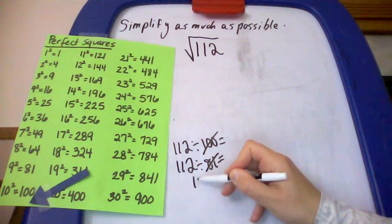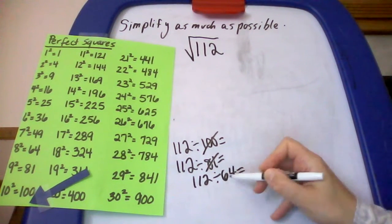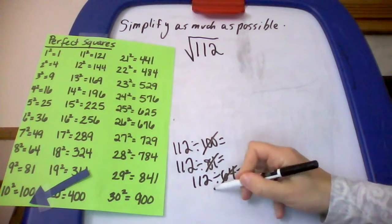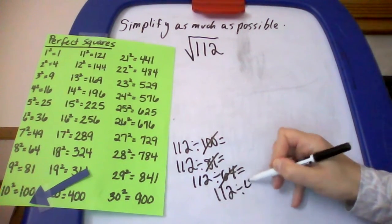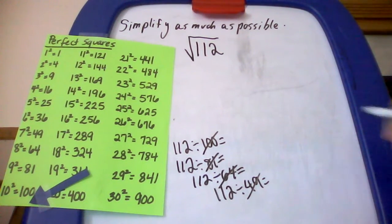I'm going to check 112 divided by 64. When I do this division, I get a decimal number. I don't get a whole number, so keep on going. I'm going to check 49 next. This one does not work. 49 is not a factor.